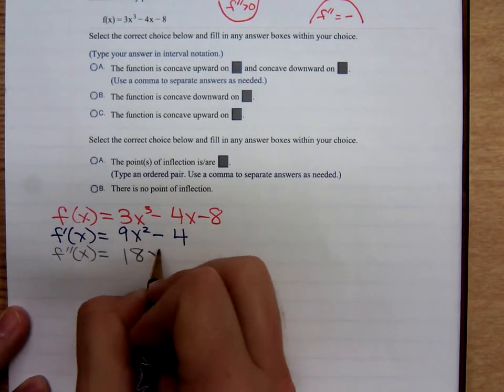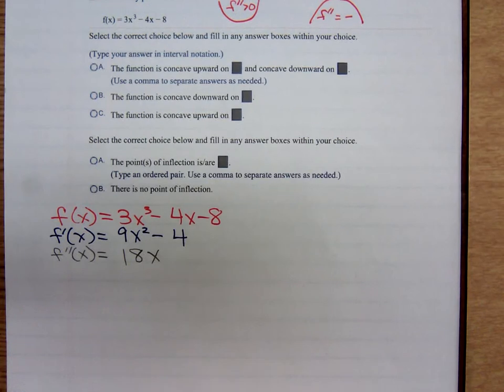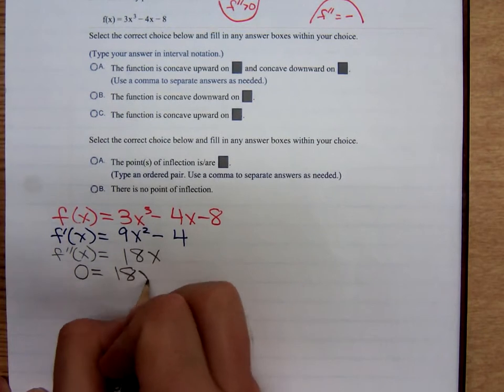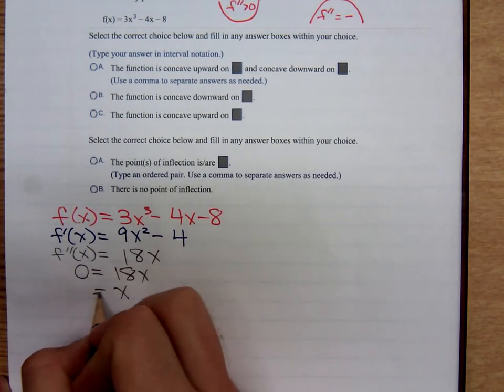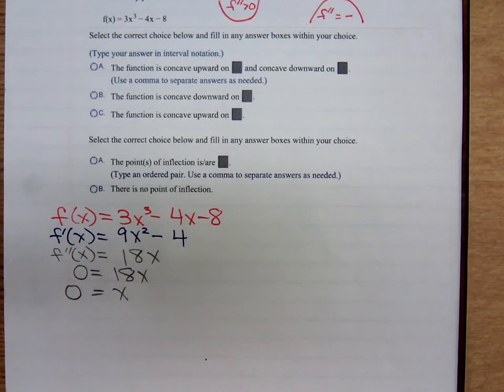That's 18x. These are polynomial functions. They're always defined, and their derivatives are always defined. So we don't have to worry about f double prime being undefined. Set f double prime equal to 0, and that'll give us x = 0. So if concavity is going to change, it'll change when x is 0.